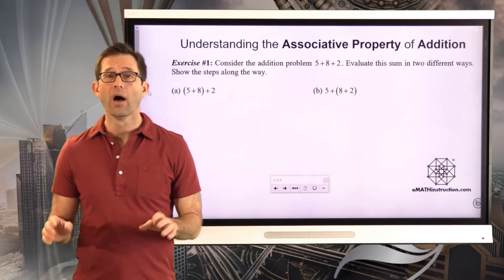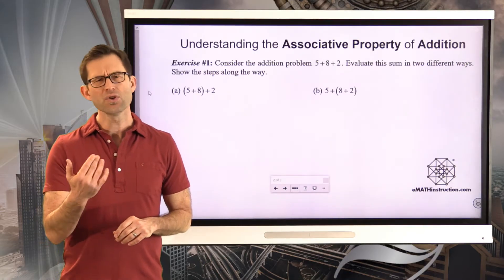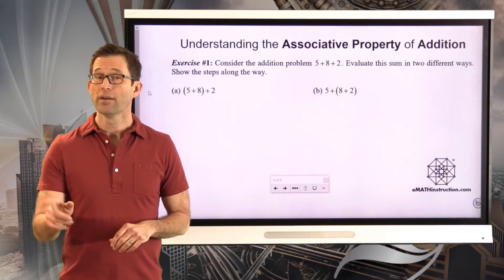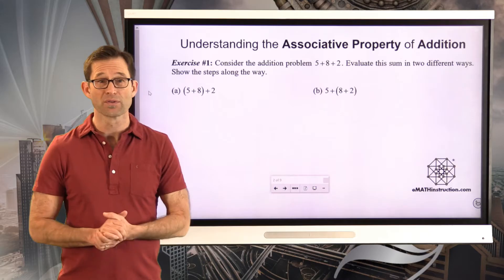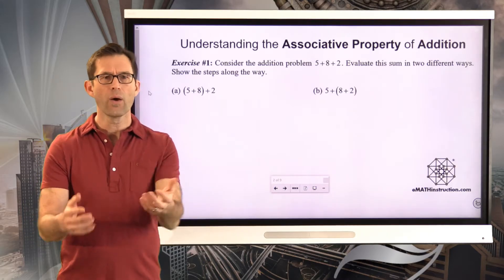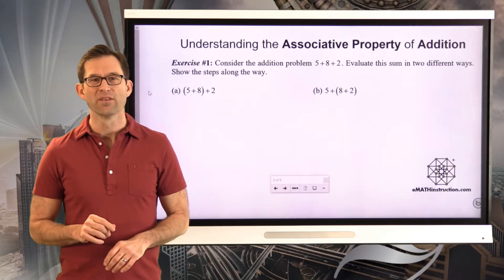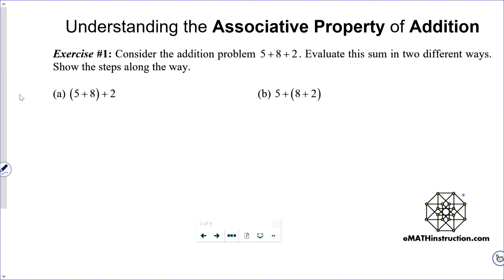In the first exercise, we're going to understand the associative property of addition. You should kind of have heard the term "associate" before — like "I don't associate with those kinds of people" — associate means to hang out with folks. Keep that in mind as we talk about the associative property of addition. Consider the addition problem 5 plus 8 plus 2. Evaluate the sum in two different ways and show the steps along the way.